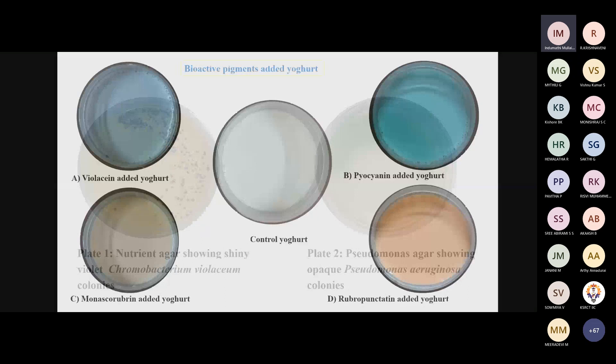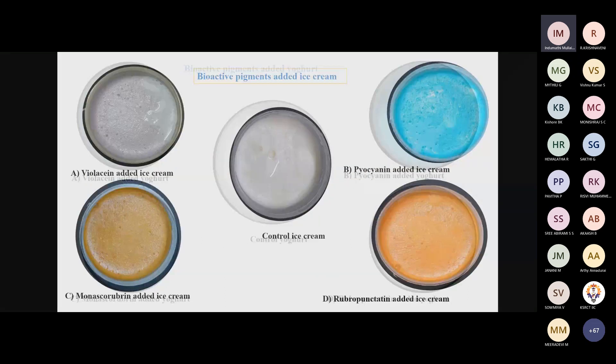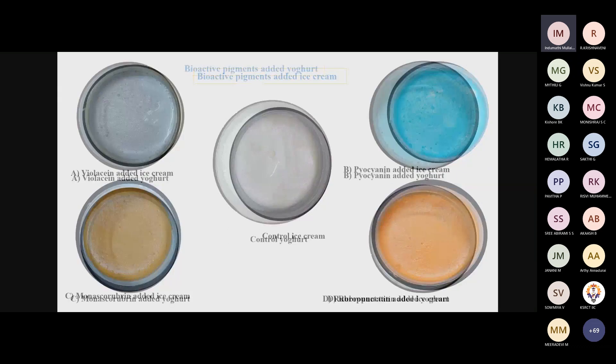We added these pigments to two products: yogurt and ice cream. The slide shows pigment-incorporated yogurt in different colors extracted from bacteria and fungi, and ice cream colored with these different pigments. Importantly, neither product showed any particular flavor from the pigments — the natural flavor of the yogurt or ice cream was preserved. These pigments do not contribute any flavor of their own. It was a great success to develop products improved through natural pigments.